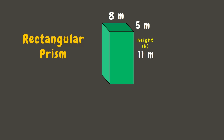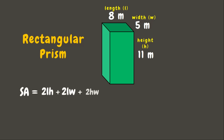Now we have a rectangular prism whose height measures 11 meters, length 8 meters, and width 5 meters. To solve for the surface area of a rectangular prism, we are going to use the formula: two times the length times the height, plus two times the length times the width, plus two times the height times the width.